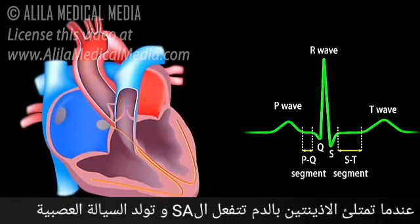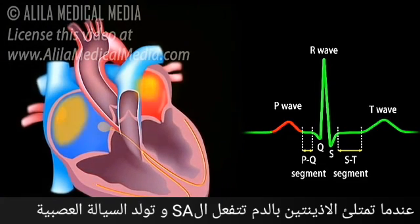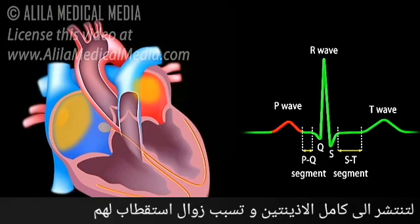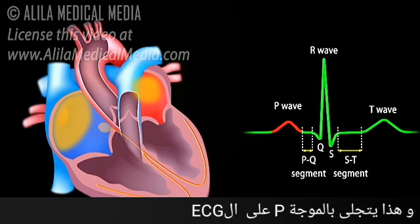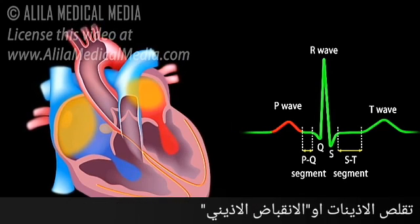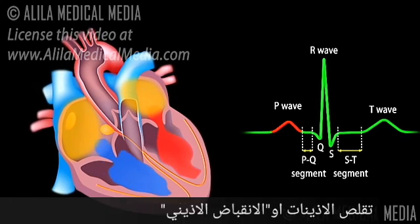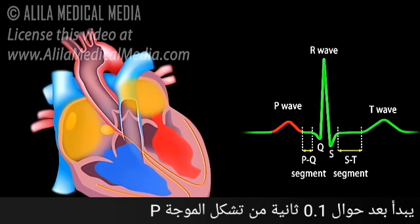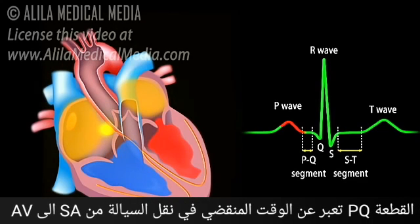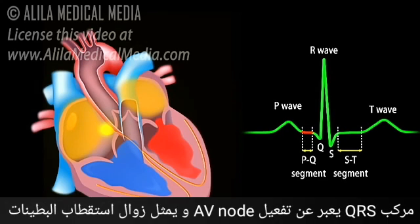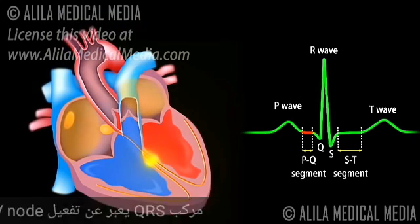When the atria are full of blood, the SA node fires, and electrical signals spread throughout the atria and cause them to depolarize. This is represented by the P wave on the ECG. Atrial contraction, or atrial systole, starts about 100 milliseconds after the P wave begins. The PQ segment represents the time the signals travel from the SA node to the AV node. The QRS complex marks the firing of the AV node and represents ventricular depolarization.